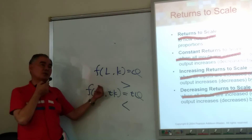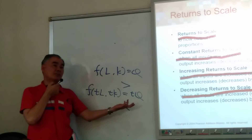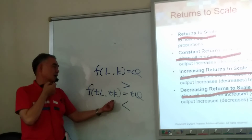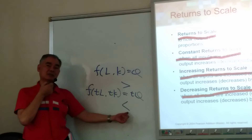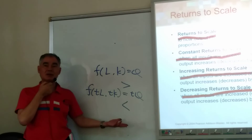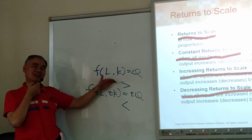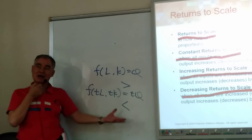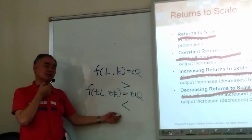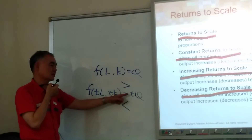If you can double your input and get something more than double, you're going to continue to expand — this is increasing returns to scale. If you double your input and get less than double, you should shrink production. So expanding to infinity or cutting to nothing doesn't make sense. Constant returns to scale is the one that makes sense in equilibrium.